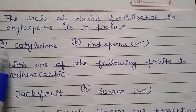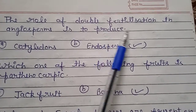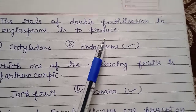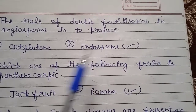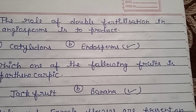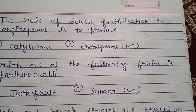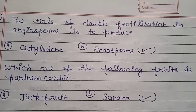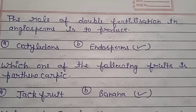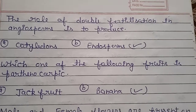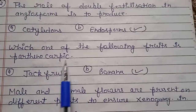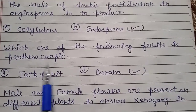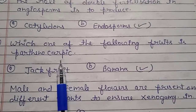Question number 12: the role of double fertilization in angiosperm is to produce what? The role of double fertilization is the formation of the endosperm.